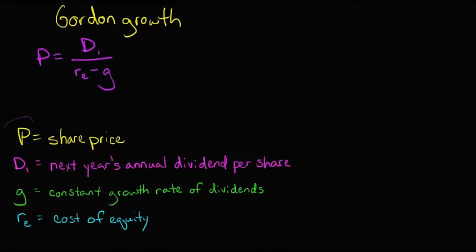P is the share price, ultimately that's what we're trying to solve for. The D1 is the dividends per share next year. And the g is just that growth rate. Do we think that these dividends are going to grow at a rate of 3%, 5%, 4%? What do we expect to happen as those dividends go off into the future?